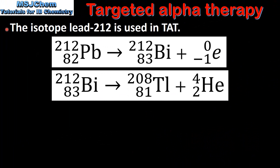The isotope Lead-212 is used in Targeted Alpha Therapy. In the first equation we can see Lead-212 undergoing beta minus decay to form Bismuth-212. In beta minus decay the mass number stays the same and the atomic number increases by 1.